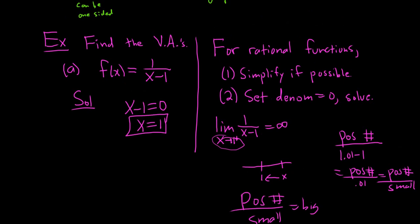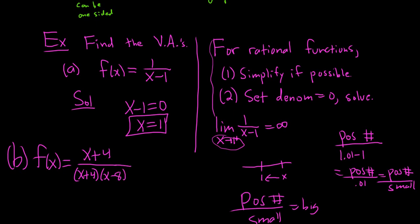Let's do a better example. F of x equals x plus 4 over—just being silly here—x plus 4 times x minus 8.